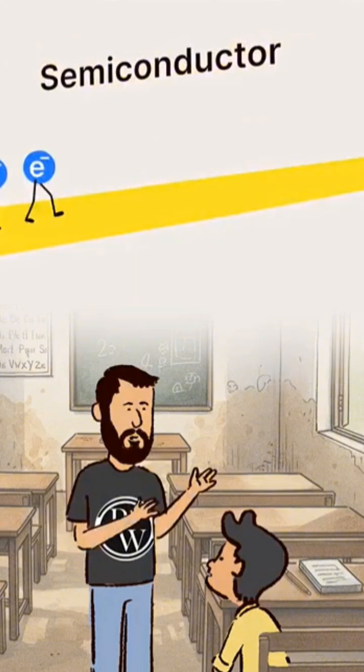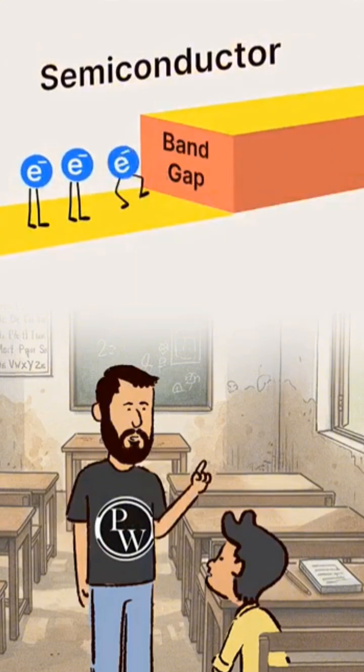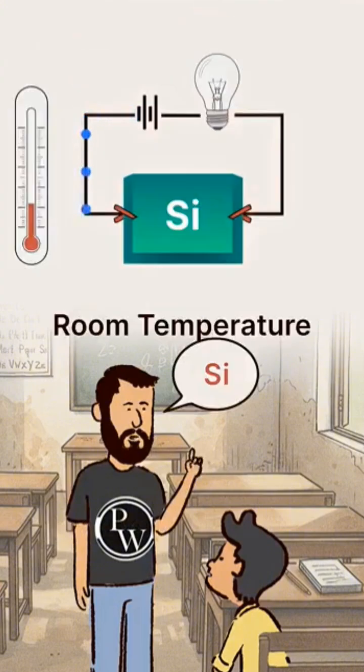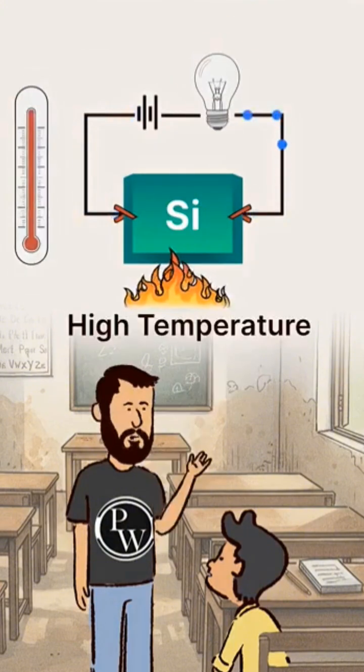But what are they? Semiconductors are materials that adjust their conductivity based on their surrounding environment, meaning they sometimes behave as insulators and sometimes as conductors. Semiconductors such as silicon act as insulators at room temperature, but behave like conductors when the temperature increases.